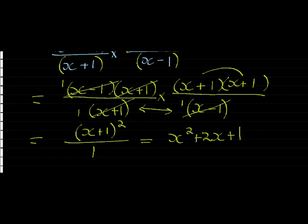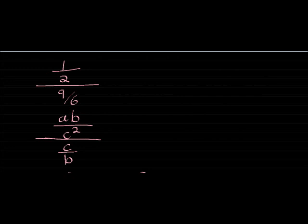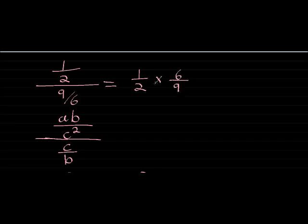Let's look at a few examples of dividing fractions. When we divide a fraction, we do what one of my students once taught me — we tip and times. What do I mean by tip and times? The denominator fraction gets tipped, i.e., flipped. So if I have a half divided by 9 over 6, I'm going to tip 9 over 6 to become 6 over 9, and then times. That gives me: 2 divides into itself once and into 6 three times, so 1 times 3 is 3 over 1 times 9 is 9. Simplifying further, 3 goes into 9 three times, so my answer is a third.